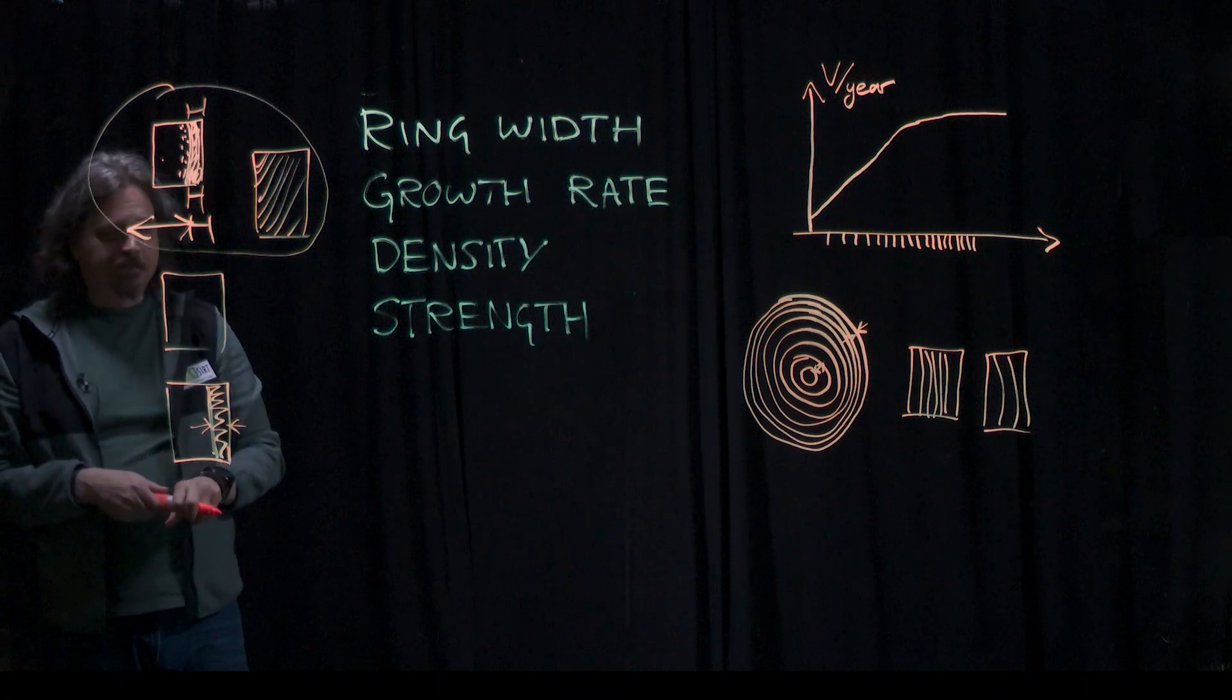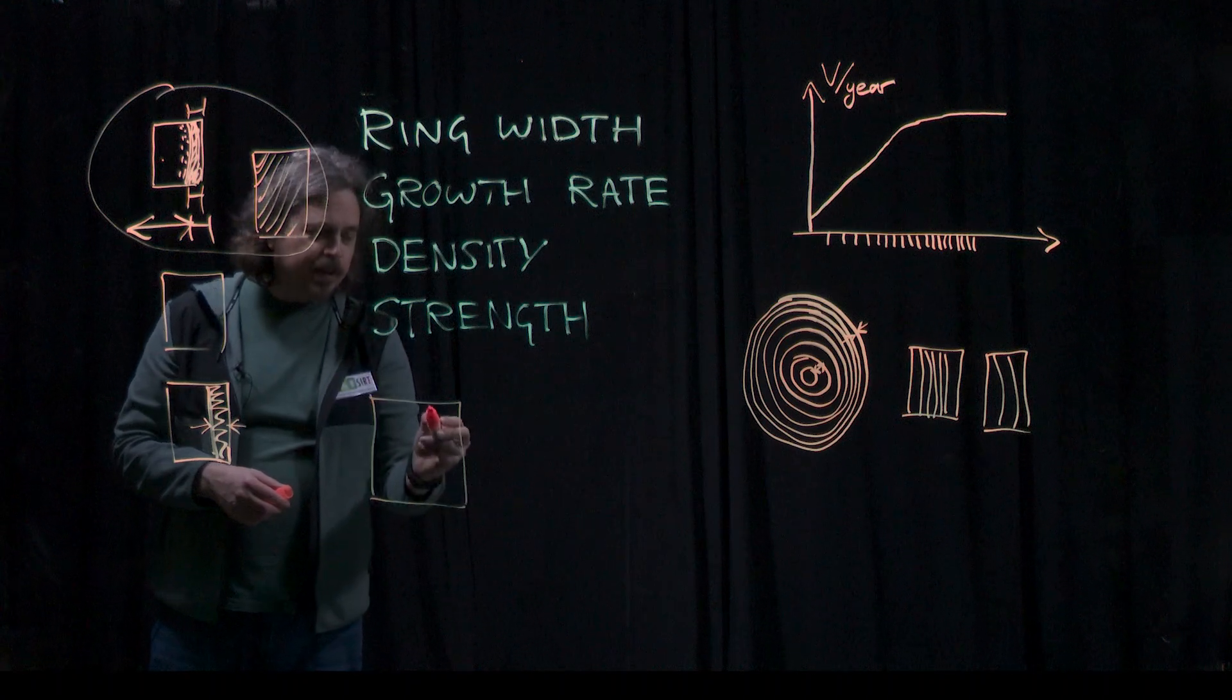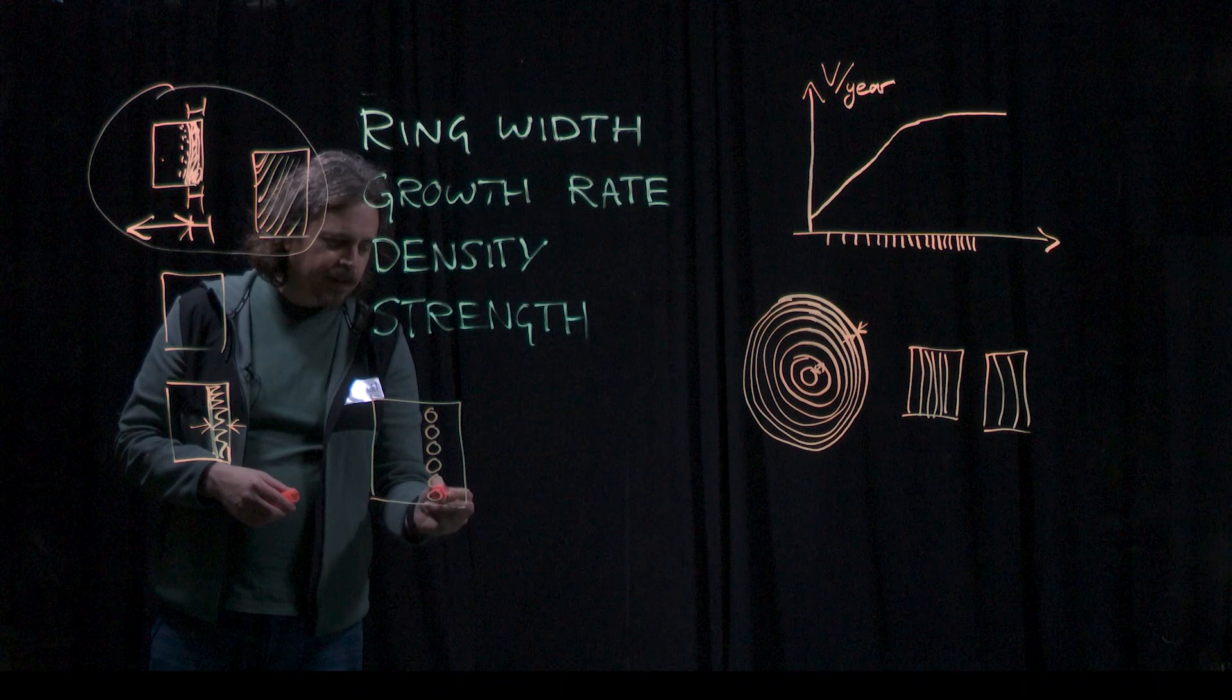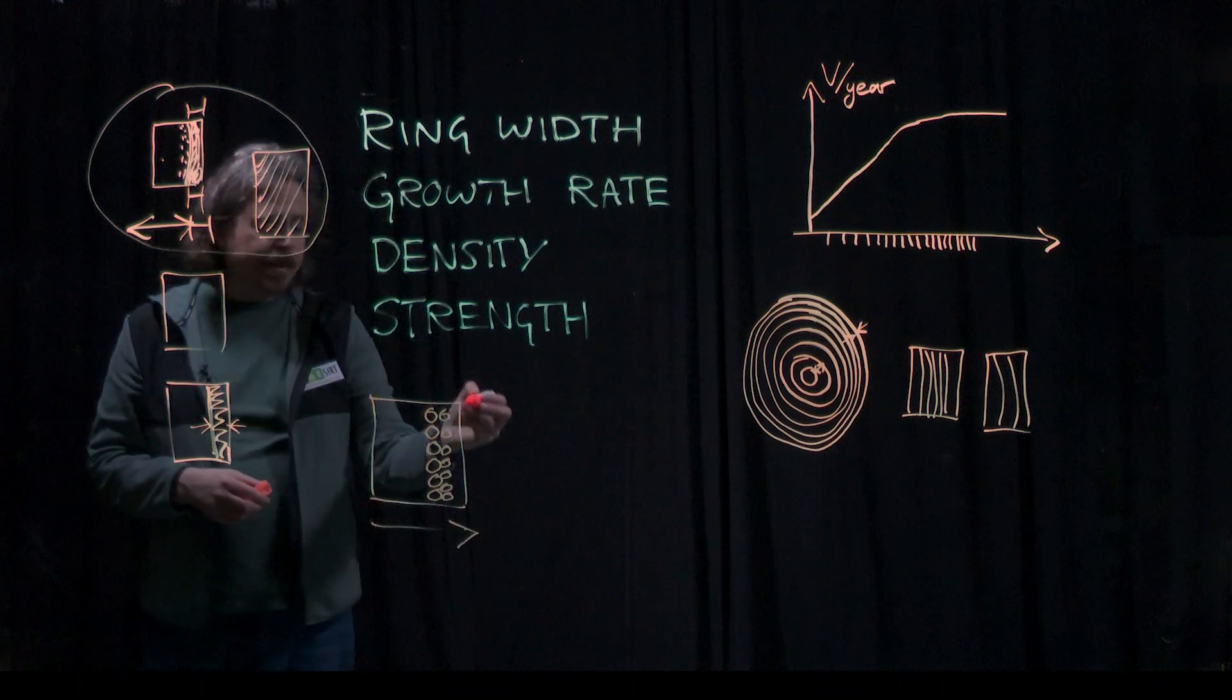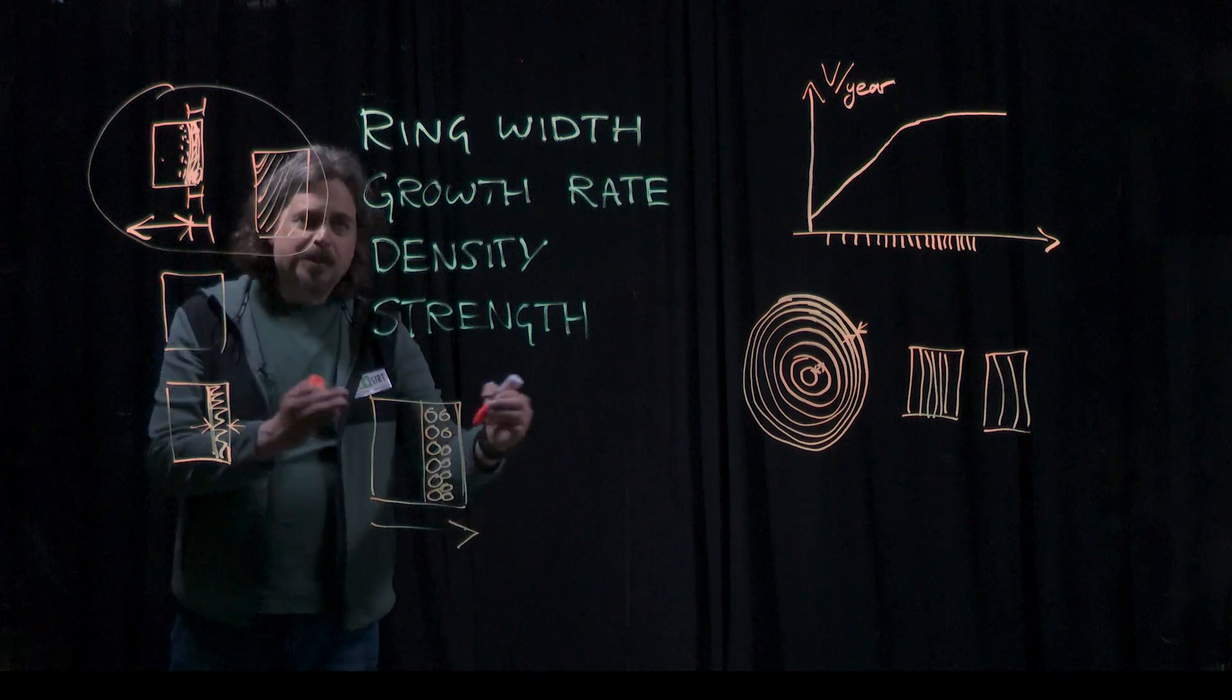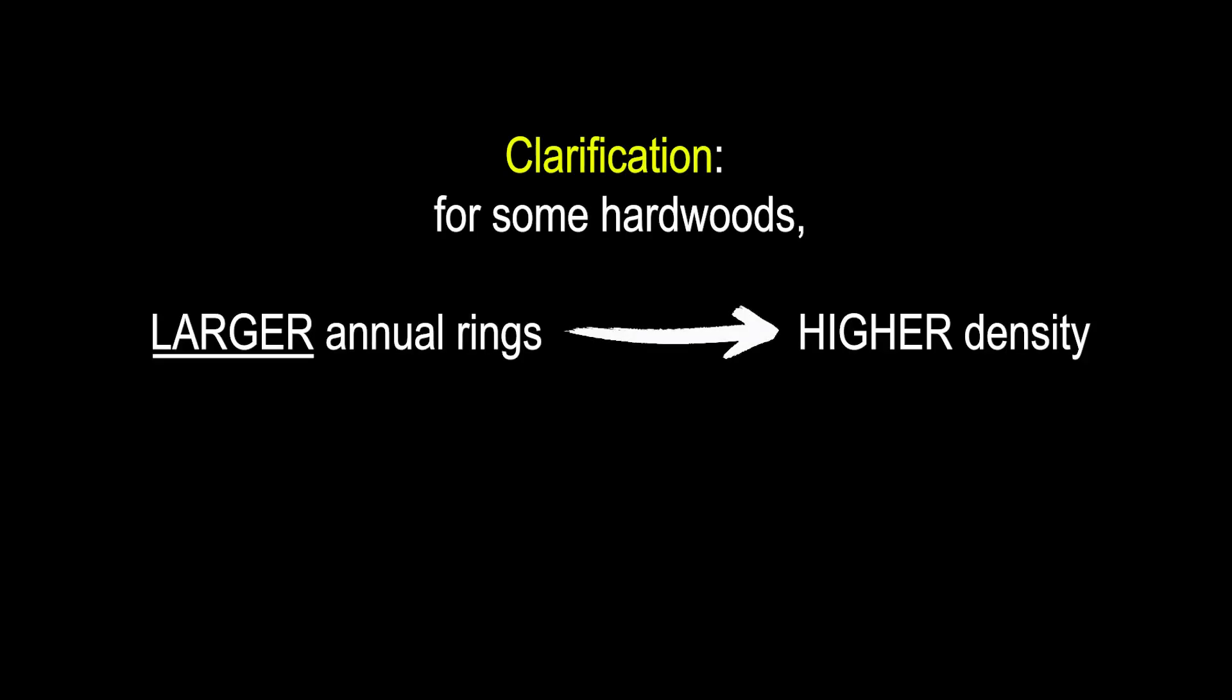For hardwoods, different story, in fact a little bit in the opposite. So in the particular case of ring porous hardwoods, where you have the pores or vessels in a certain place within the growth ring, this is the direction of the growth, then you would expect to have actually higher density the larger the ring because the larger the ring, the less of it is taken up by the vessels.